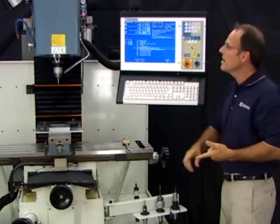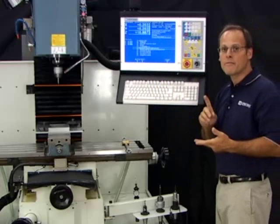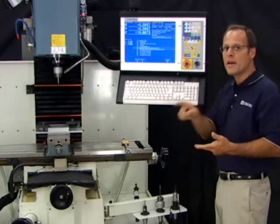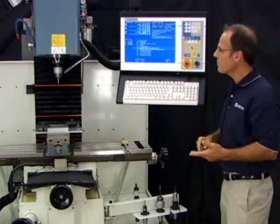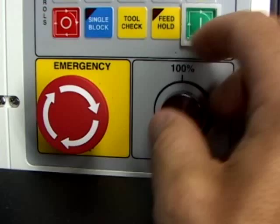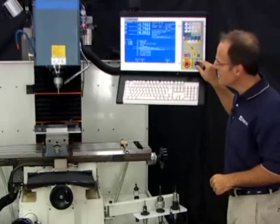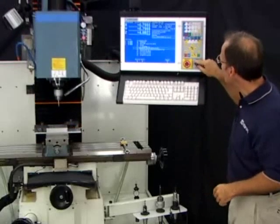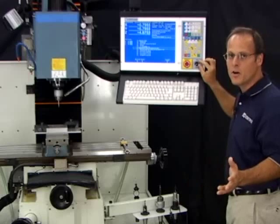The spindle turns on, and now the control is moving to that first hole, that first center drill on that bolt hole circle. Now I'm in control with the knob. Things are moving slow because I've got it turned down. I'm going to speed things up a little. You can see the Z axis coming down. I can speed up and slow it down, no problem.